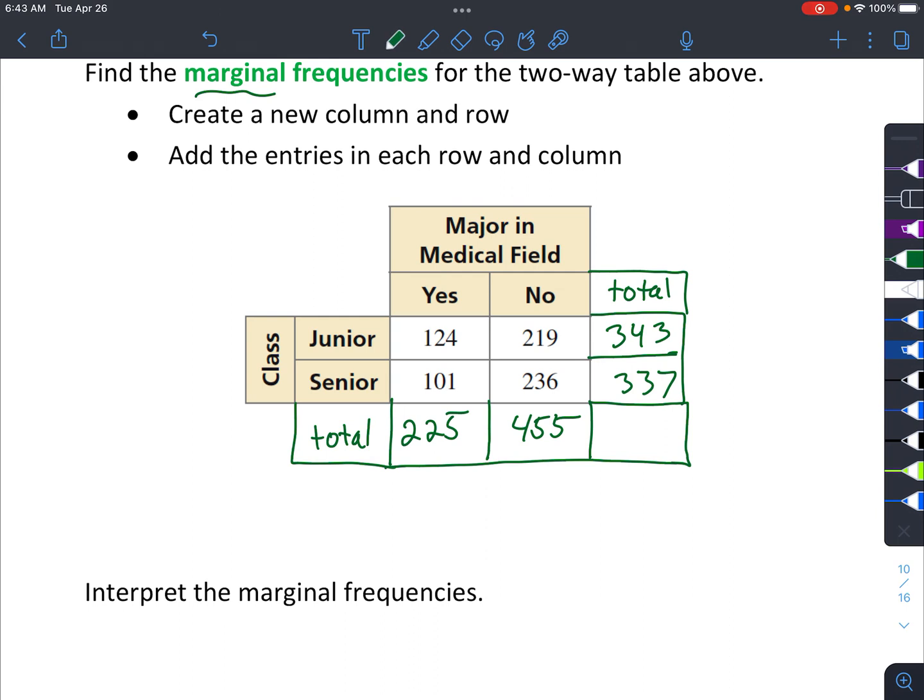Oh, then you might say, well, what about this last corner? So this last corner is actually the total of the rows and the columns. So if you were to add up 343 plus 337, you get 680. And then if you add these two numbers also, you also get 680. It's kind of a nice way to check your work, actually. So they add up to the same thing.